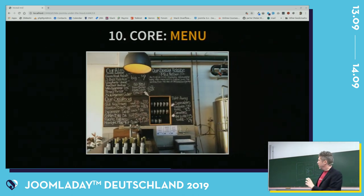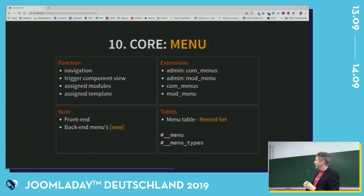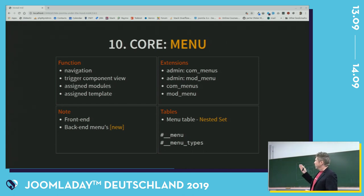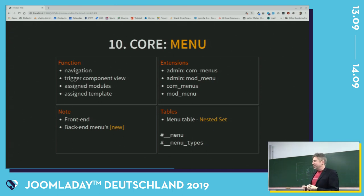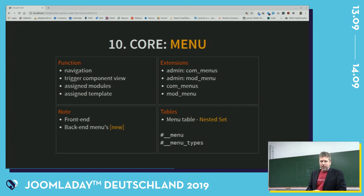If you write your own components, you can use all of this. First of all, menus — how menus work. Menus are necessary for navigation in Joomla, and also to trigger the component views. You can also use menus to assign modules or templates. You have front-end menus, and since Joomla 3.8 or 3.9 you can create menus in the back-end, which is really nice. You can set up your own structure and use ACL in Joomla to have different groups with different back-end access. Something interesting: they have nested sets for the menu table.